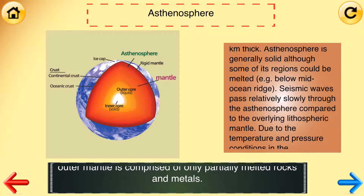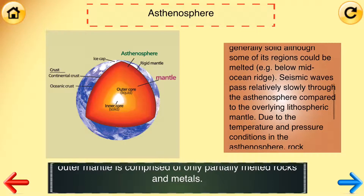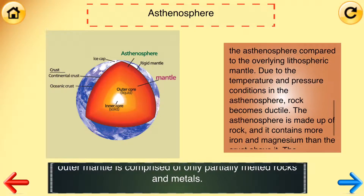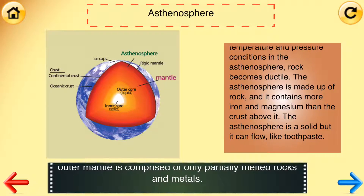Seismic waves pass relatively slowly through the asthenosphere compared to the overlying lithospheric mantle. Due to the temperature and pressure conditions in the asthenosphere, rock becomes ductile. The asthenosphere is made up of rock and contains more iron and magnesium than the crust above it. The asthenosphere is solid, but it can flow like toothpaste.